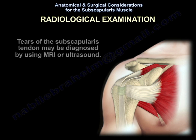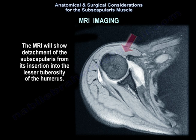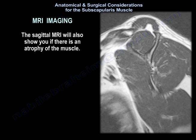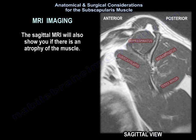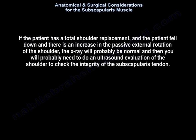Radiological examination: Tears of the subscapularis tendon may be diagnosed using MRI or ultrasound. The MRI will show detachment of the subscapularis from its insertion into the lesser tuberosity of the humerus. The sagittal MRI will show whether there is atrophy of the muscle.